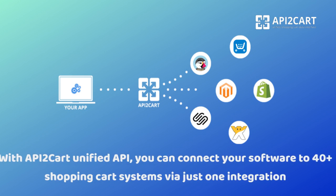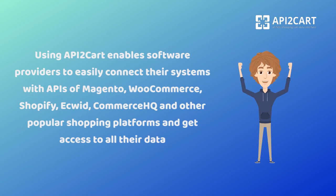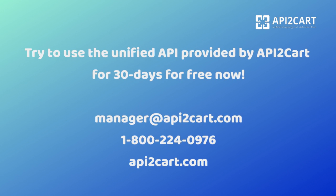With API2Cart's Unified API, you can connect your software to 40-plus Shopping Cart systems via just one integration. This enables software providers to easily connect their systems with APIs of Magento, WooCommerce, Shopify, Ecwid, Commerce HQ, and other popular shopping platforms, and get access to all their data. Try the unified API provided by API2Cart for 30 days for free now.